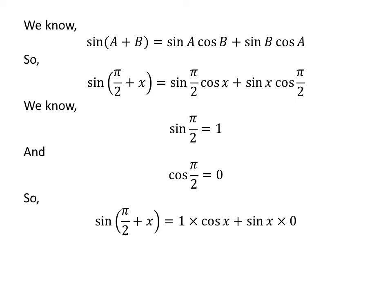Let us replace the value of sine of half of pi and cosine of half of pi in the above expression. So we got sine of half of pi plus x is equal to 1 times cosine of x plus sine of x times 0.